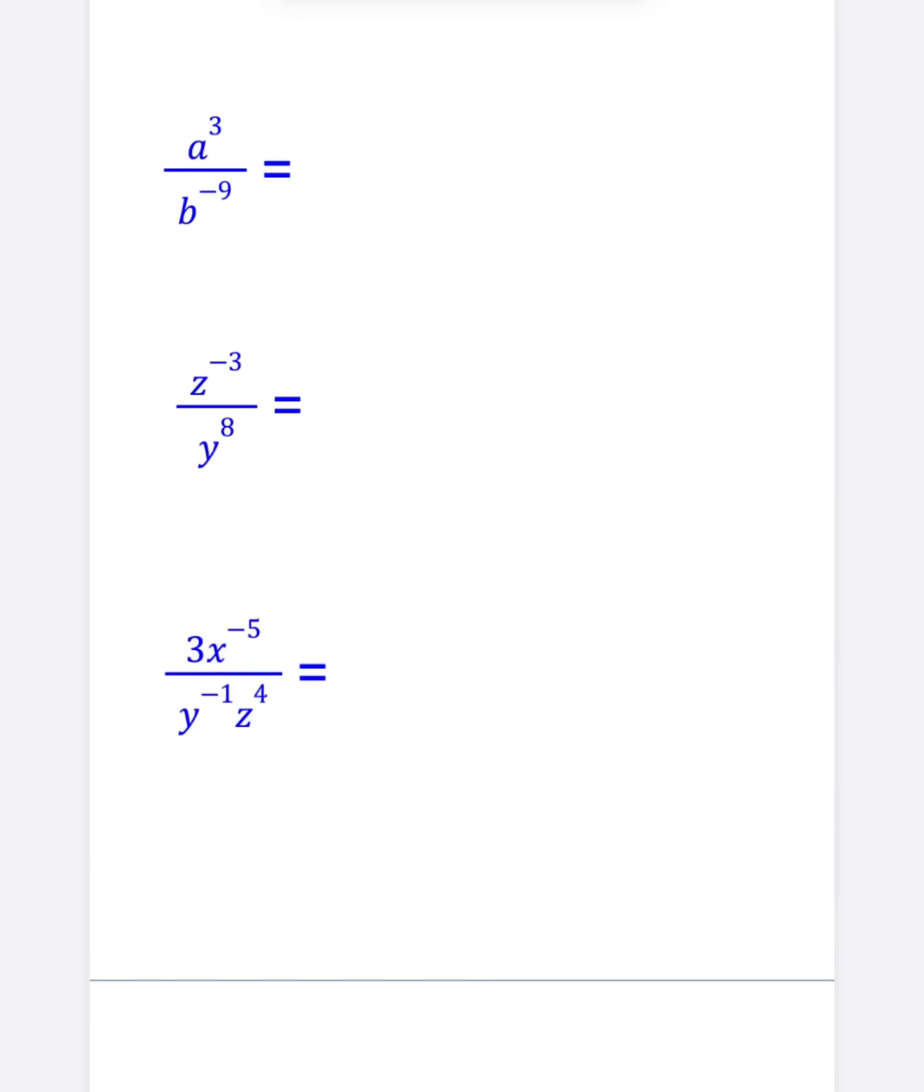We're going to simplify all these expressions by quickly changing all of these negative exponents into positive ones using two simple rules. Rule number one, move the base with the negative exponent to the other side of the fraction bar.